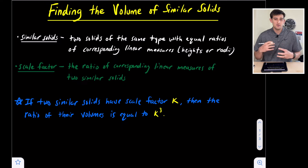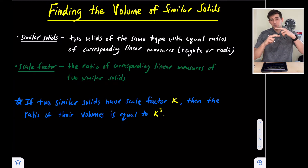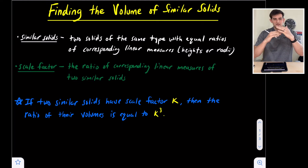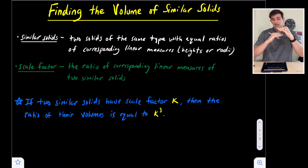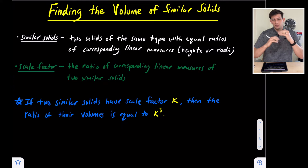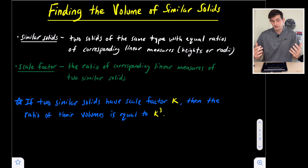We have to be careful with the order here. Whatever order we put the two solids in to find the ratio for the scale factor — let's say the height of A divided by the height of B — once we find that scale factor, we need to use volume of A over volume of B. So whatever order we do A over B for the ratio of the height or radius, we need to do that same order when we go to find the volume.